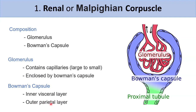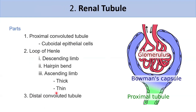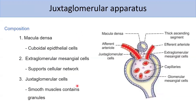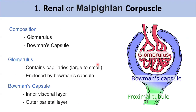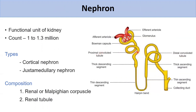The renal tubule has multiple parts: the proximal convoluted tubule, then Henle's loop, then the distal convoluted tubule. The loop of Henle has five segments: the thick descending segment, the thin descending segment, the hairpin bend at the bottom, the thin ascending segment, and the thick ascending segment. The shape resembles a hairpin bend, which is the origin of its name.